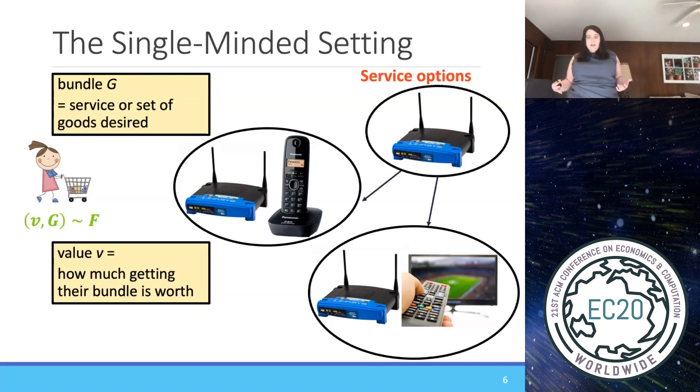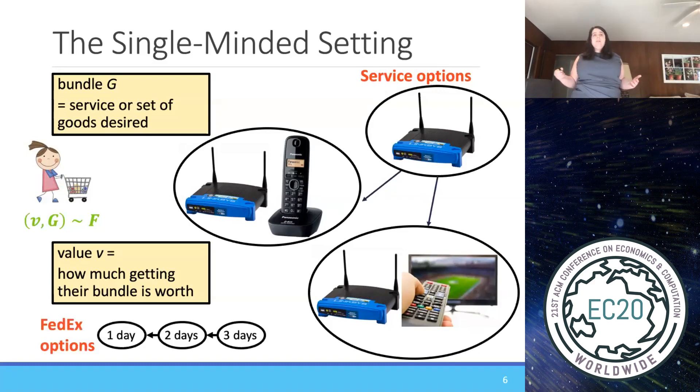Their value and bundle is drawn from some joint prior distribution known to the seller. And notice here that there is some ordering on how good the different bundles are because Wi-Fi and phone contains Wi-Fi, and therefore it is better in some sense than Wi-Fi. However, Wi-Fi and phone is not comparable to Wi-Fi and TV because neither one contains the other. So they're incomparable. So here we have a partial ordering. And notice that this contrasts to earlier work on the FedEx setting where there are deadlines of one-day shipping, two-day shipping, three-day shipping. A customer just has a deadline when they want their package by, and the shipping options are totally ordered in some sense because getting your package within one day is strictly better than two days and everything is totally ordered. So this setting is partially ordered and thus more general than the FedEx setting which is totally ordered.